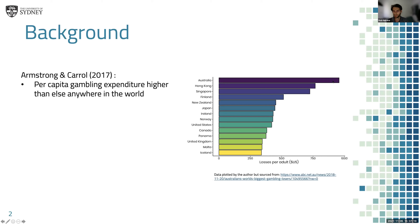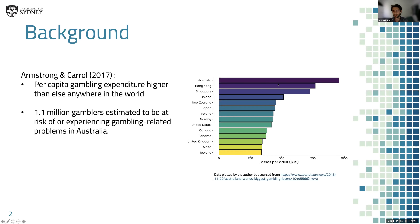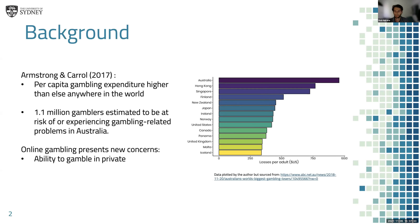To give you some background context, Australians gamble more per person per year than any other country in the world by quite a significant margin — more than double most countries in the world. And it's estimated that there are over a million gamblers who are either at risk of or are currently experiencing gambling-related problems in Australia.